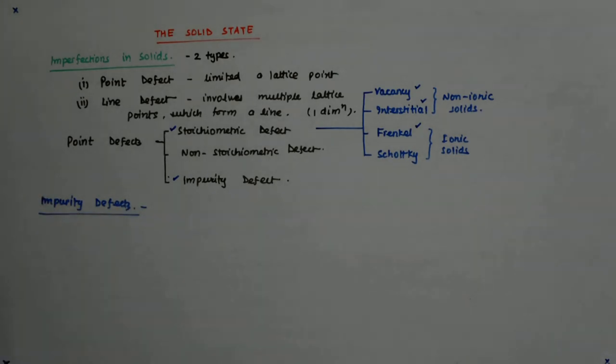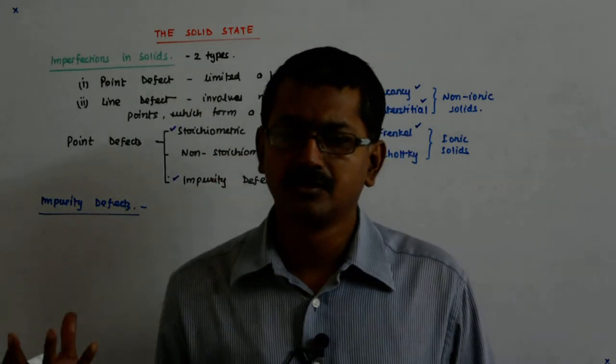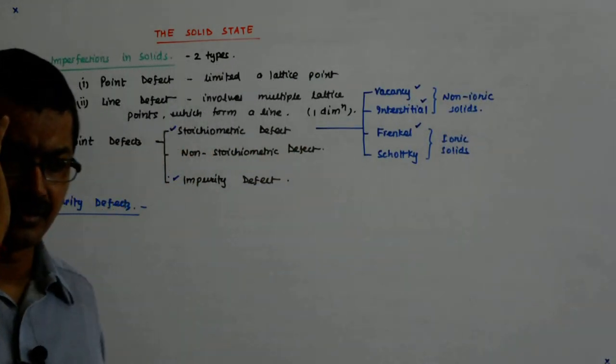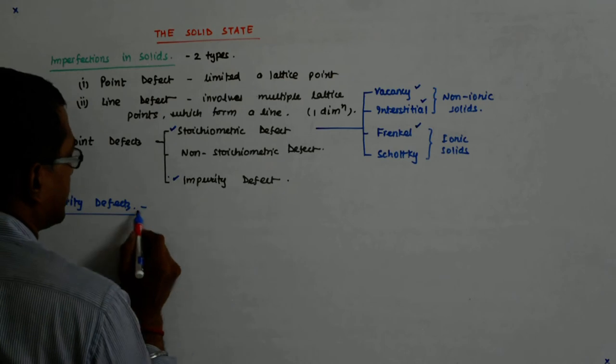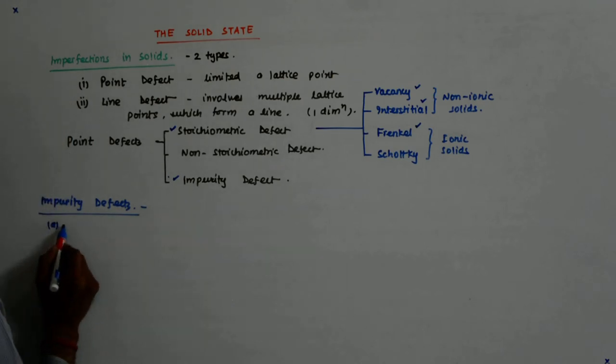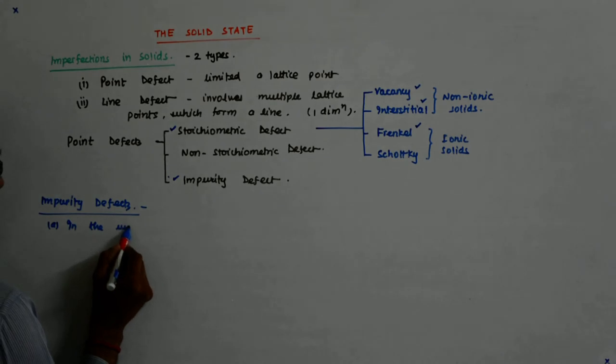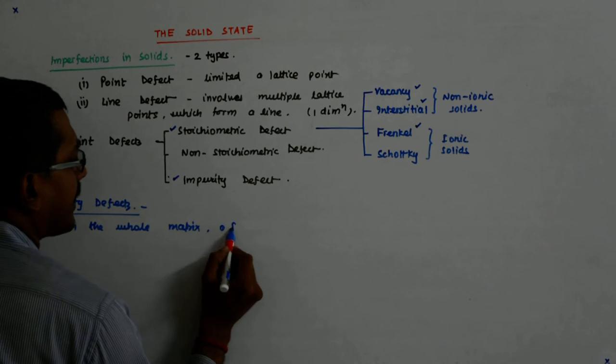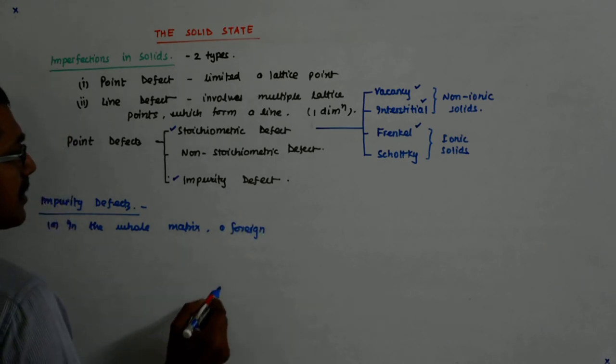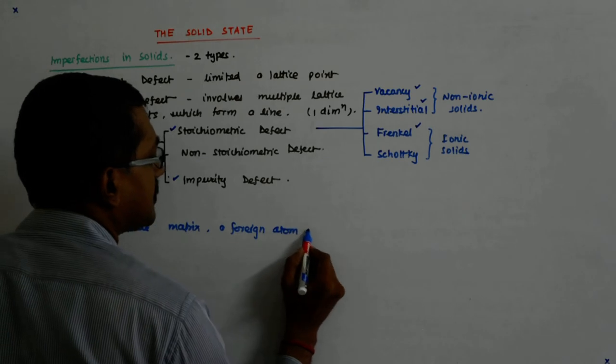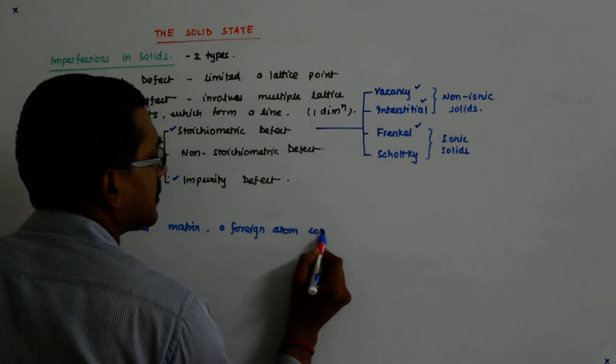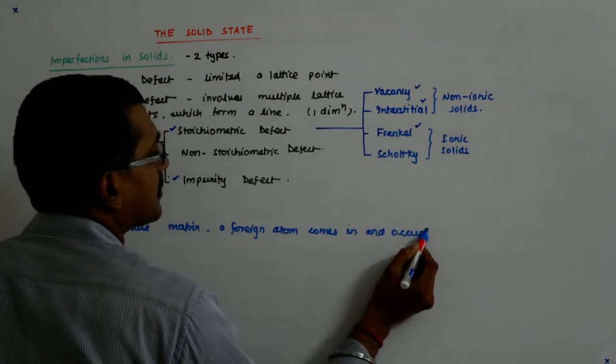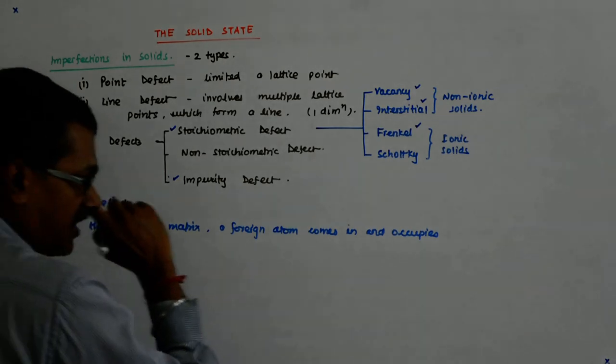As the name suggests, instead of one of the atoms, something else pitches in and that may be an unwanted thing that comes in. So, in the whole matrix, a foreign atom comes in and occupies the atom.